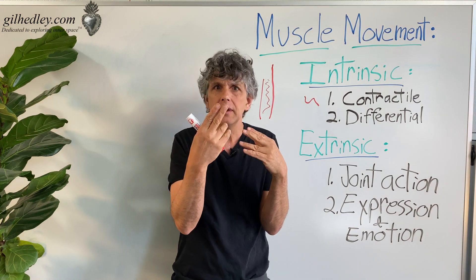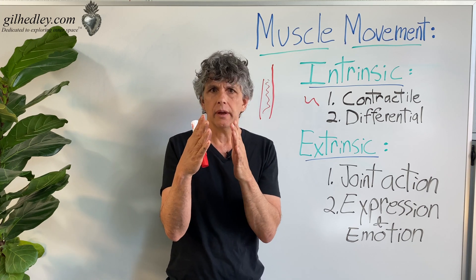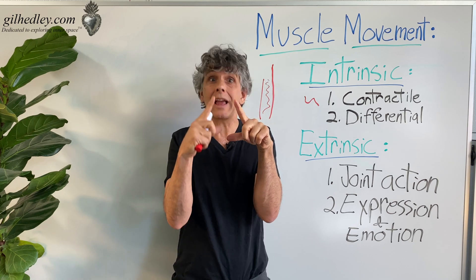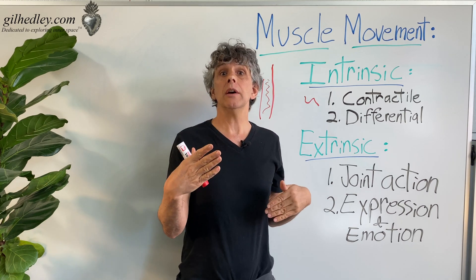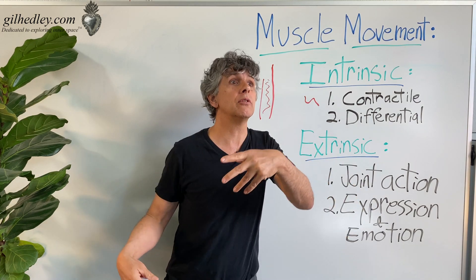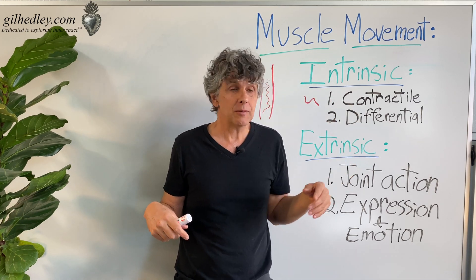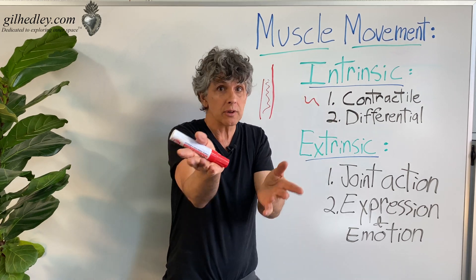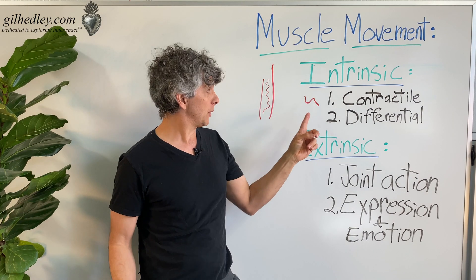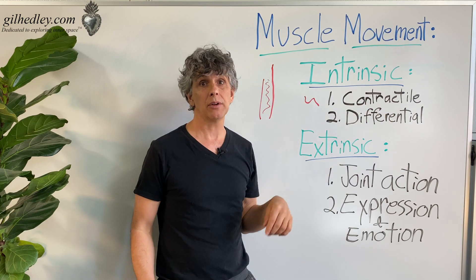Literally every muscle fiber in your body is wrapped in connective tissue of a slippery, membranous nature. This allows a contraction to take place without dragging the neighboring fiber with it — because if it did, you wouldn't move fluidly; you'd move in spasms. Instead, we can move smoothly and beautifully, dance and express ourselves, because of differential movement between contractile fibers.